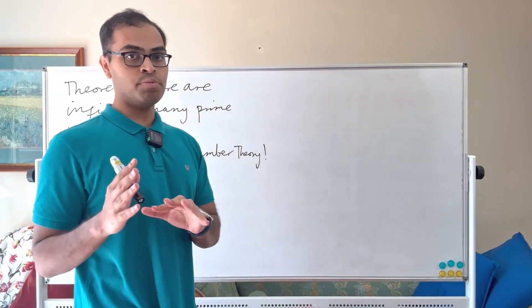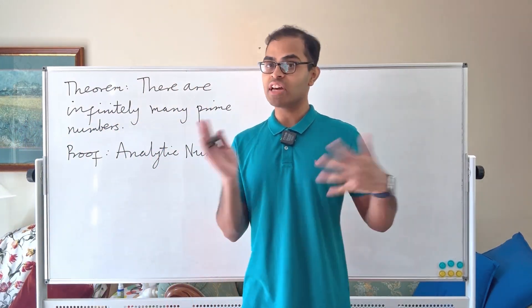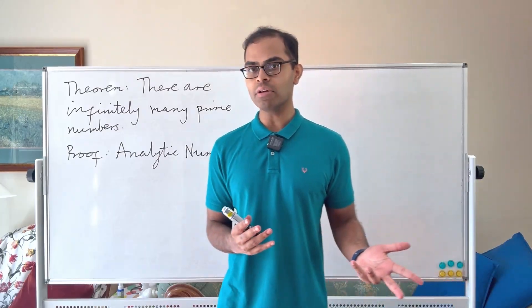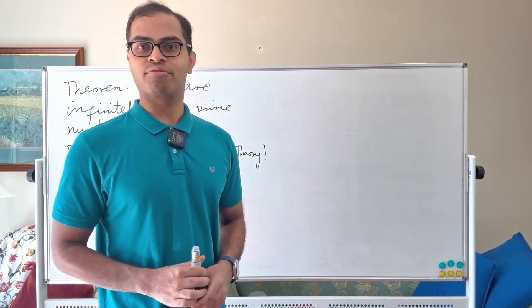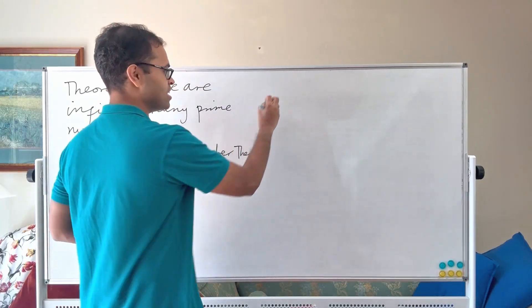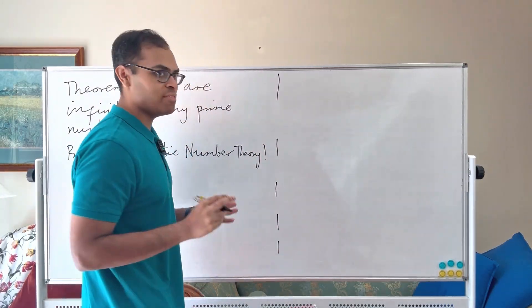Now there are many standard proofs that there are infinitely many prime numbers. Euclid's one is famous. I've done a video on that in my channel. Check that out. Here what we're going to do is we're going to use L functions and the Euler product formula. I'm going to dissect everything. It's going to be super basic even though it sounds fancy.